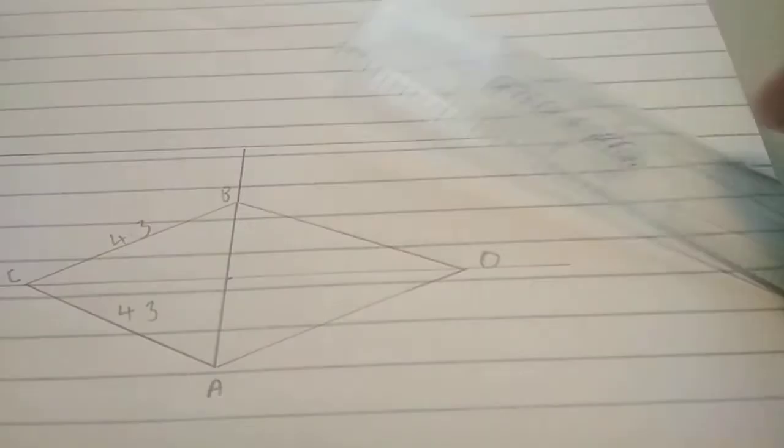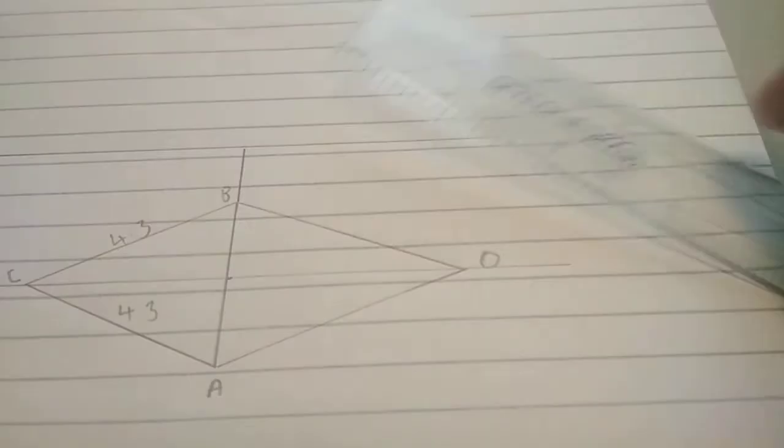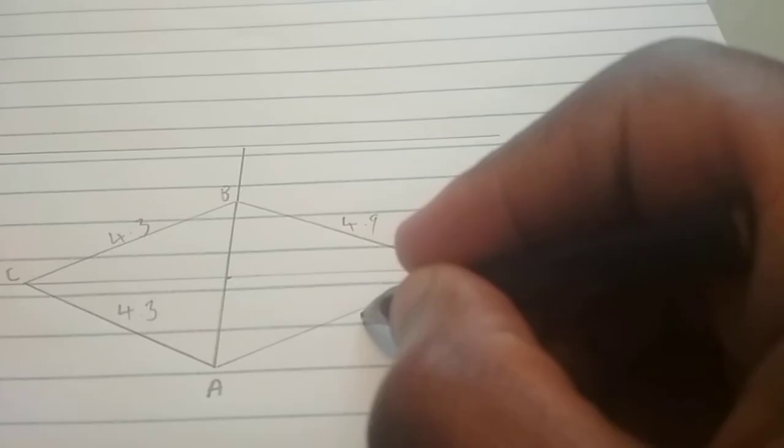Goes right across as well. Now, just to name these ones. This was 4.9. That's 4.9 as well.